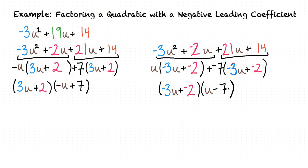Now you might object and say, this is not the same as our original answer. Let's think about this. (3u + 2) times -1 is (-3u - 2), and (-u + 7) times -1 is (u - 7), and this answer, when we multiplied our first answer by -1 twice, matches our other answer.